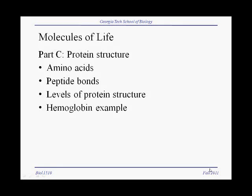In this third part of the molecules of life, we will look specifically at protein structure. We'll take a look at the 20 different kinds of amino acids, how they link into peptide bonds. We'll talk about four different levels of protein structure, and we'll integrate this all by looking at the specific example of hemoglobin and sickle cell disease.